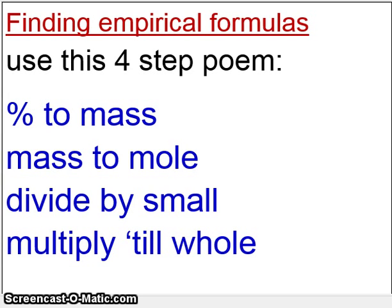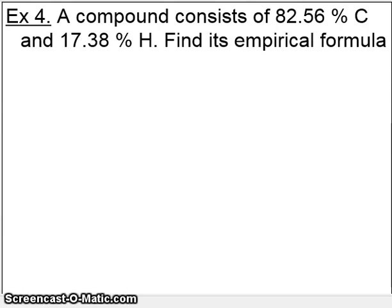We're actually going to do an example. This example will use all four of these steps. A compound consists of 82.56% carbon and 17.38% hydrogen. Find its empirical formula. Let's apply the four steps of the poem to this problem.